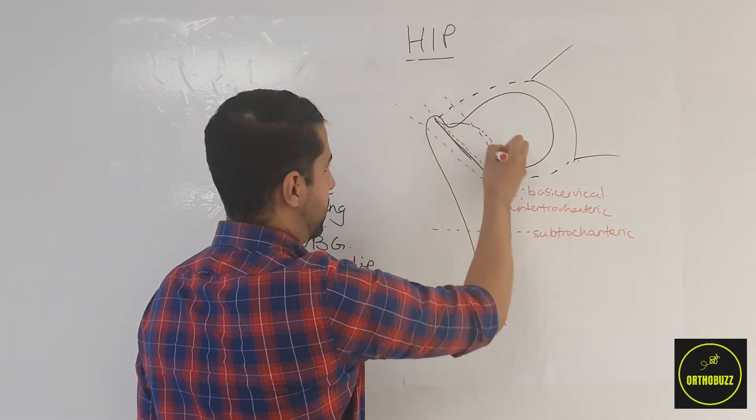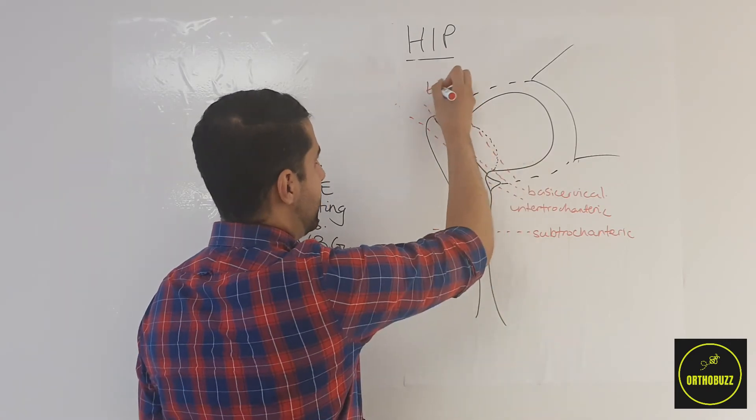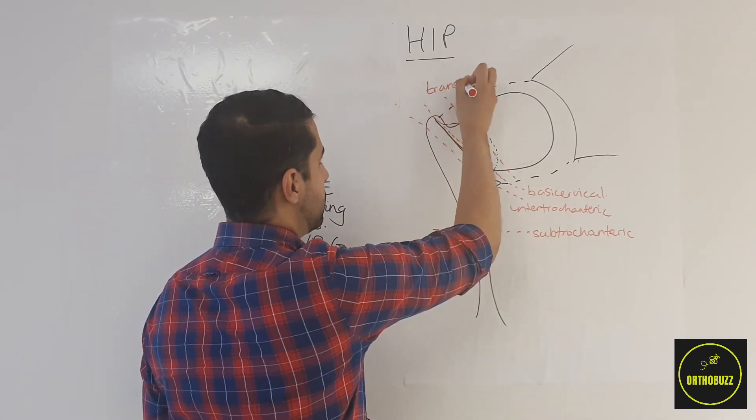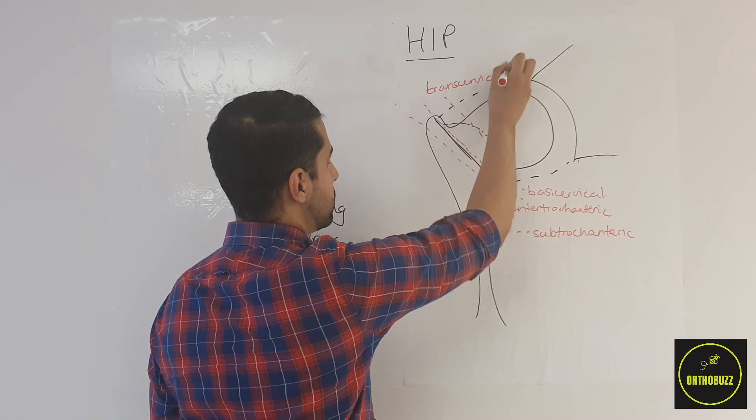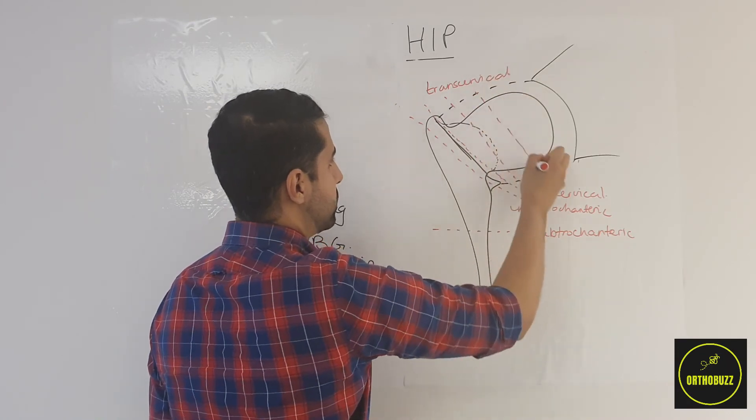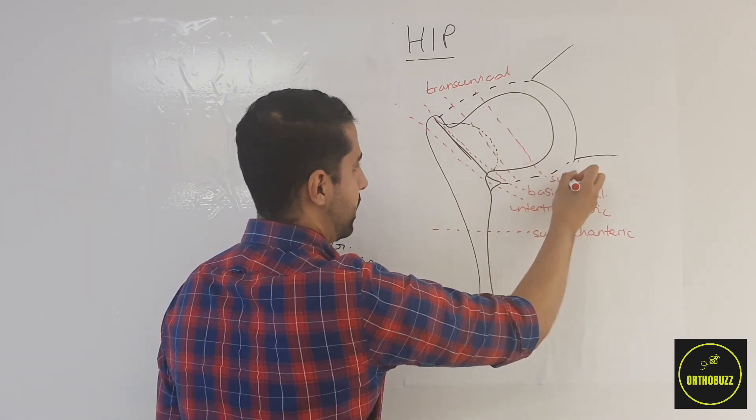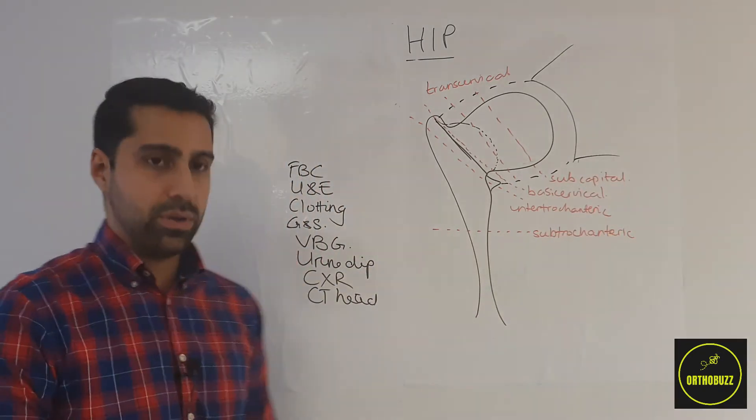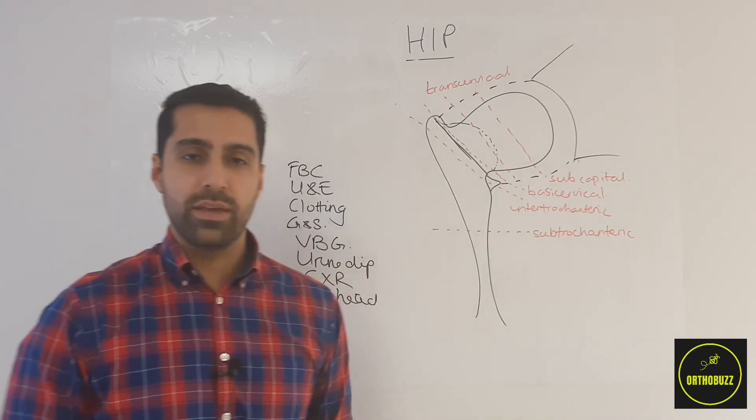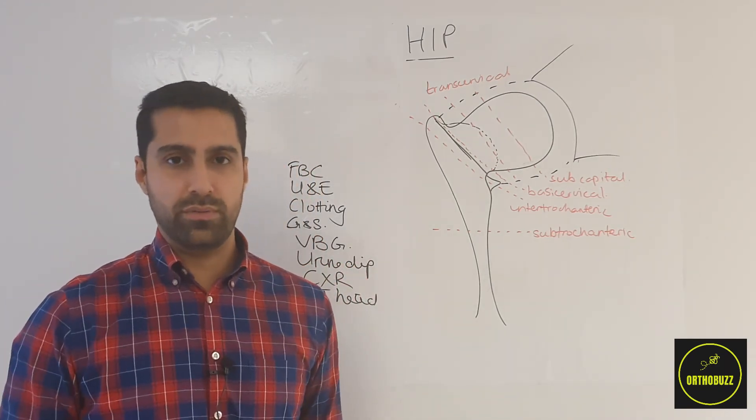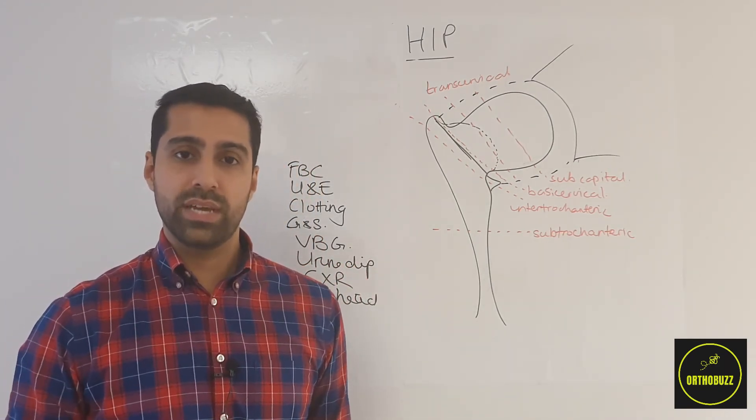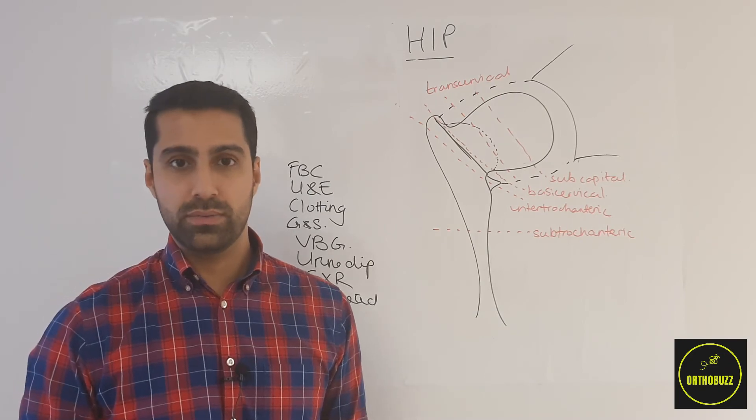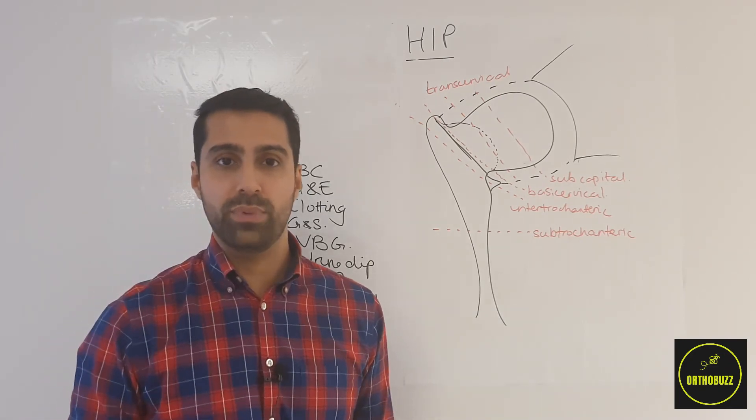Intracapsular fractures include those going through the neck of the femur. These are known as transcervical, and those going just underneath the head or subcapital. These both are intracapsular and therefore will require replacement of the head due to the risk of death of the head from avascular necrosis, as the blood supply is likely to have been compromised.